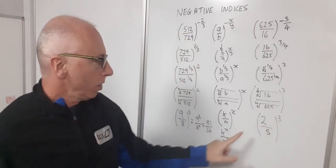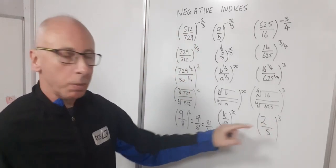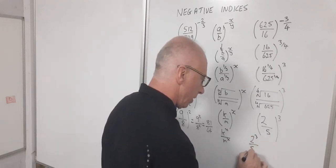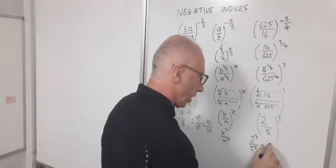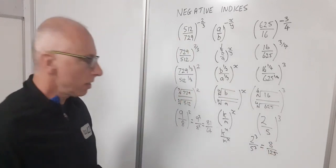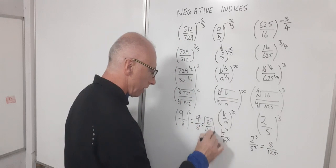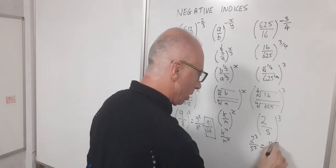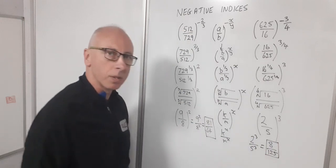So now using this rule I can bring the cube inside. So now I've got two cubed over five cubed, which simplifies to 8 over 125. So those are going to be my two answers to my original questions. And that completes those.